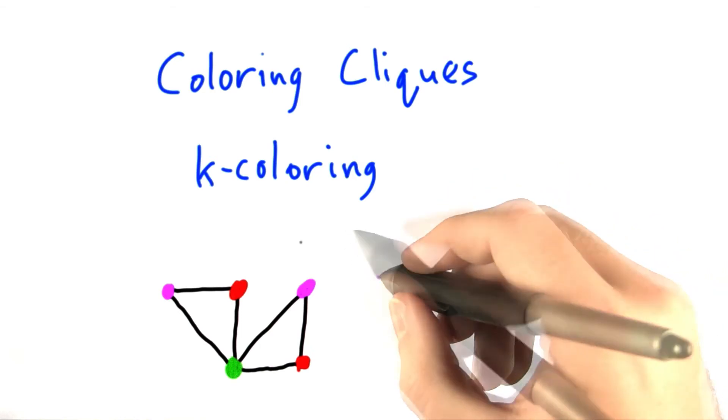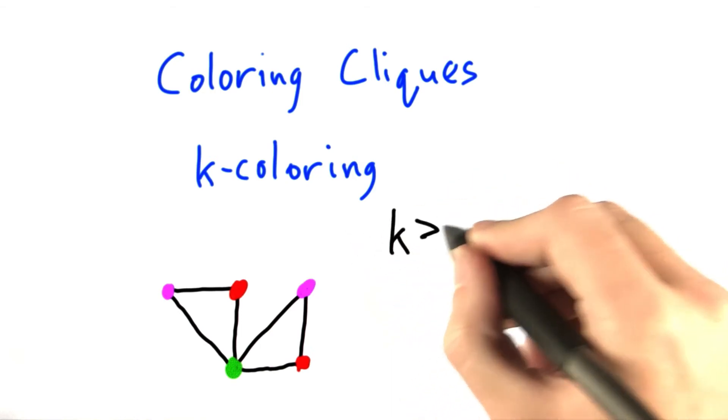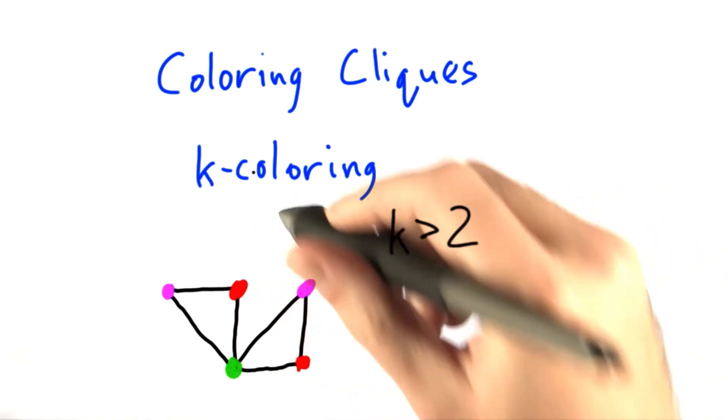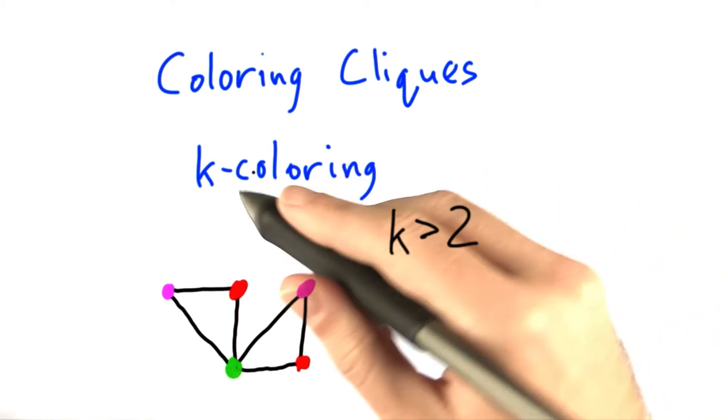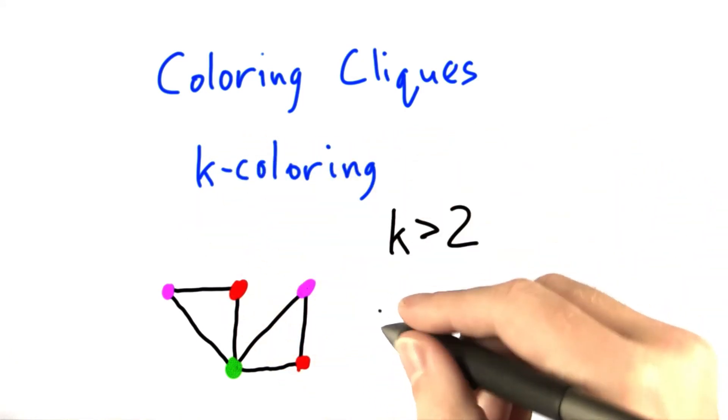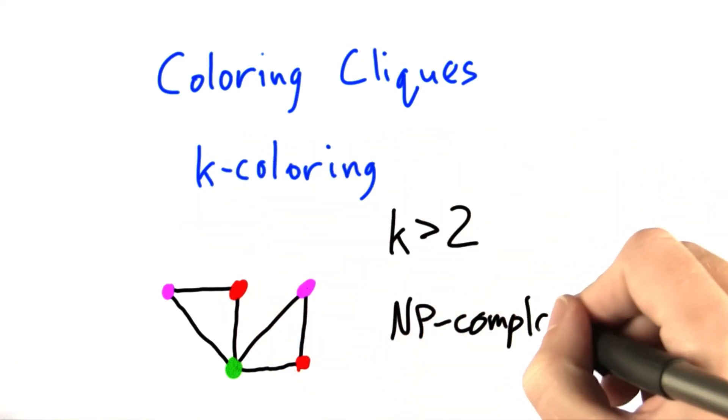And at least for k greater than 2, whether a graph can be colored in k many colors is an NP-complete problem.